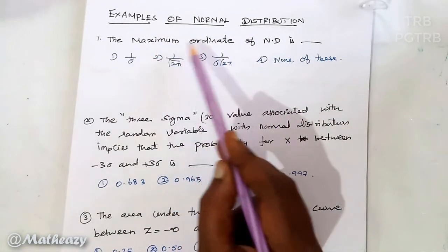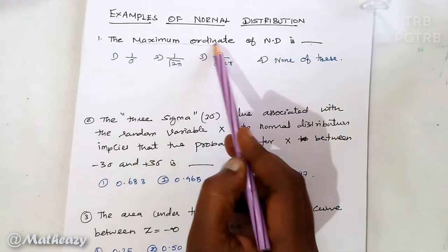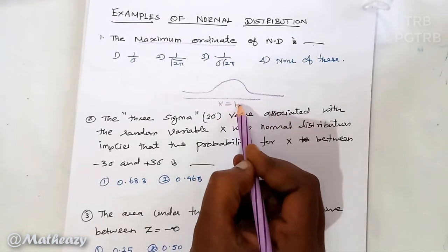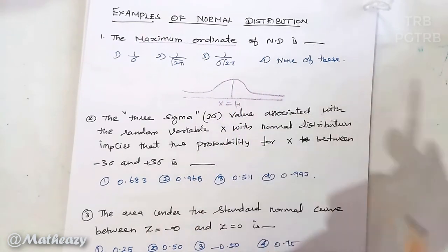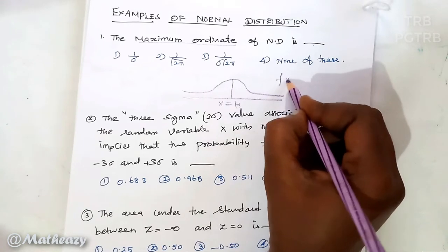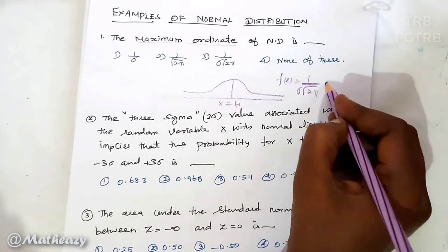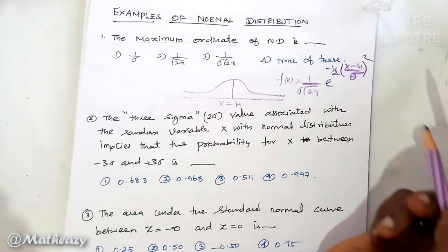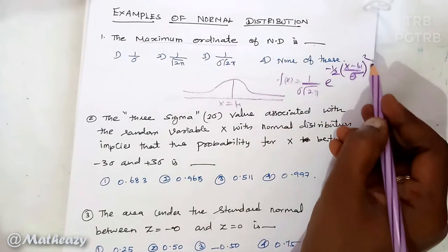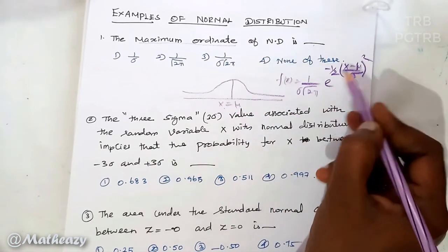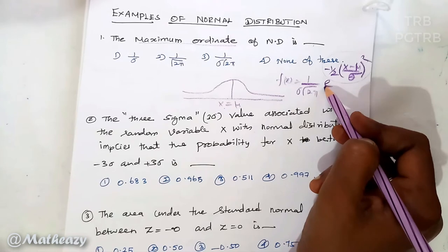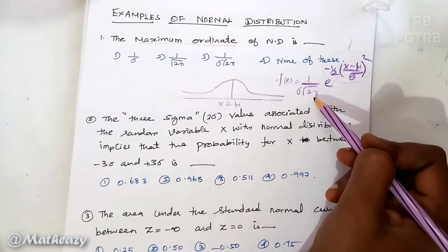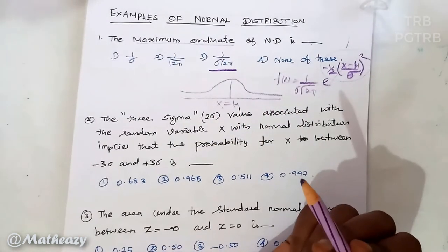Problem: What is the maximum ordinate of a normal distribution? The maximum ordinate occurs at x = mu (the mean). At x = mu, the exponent becomes zero, so f(x) = 1/(σ√2π) × e^0 = 1/(σ√2π). This is the maximum ordinate value of the normal distribution.